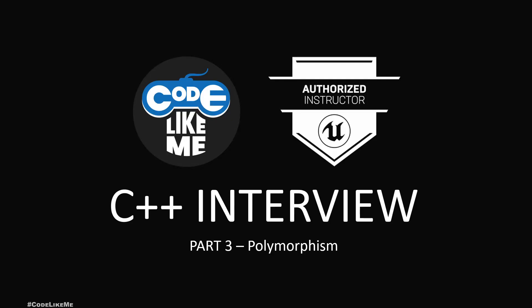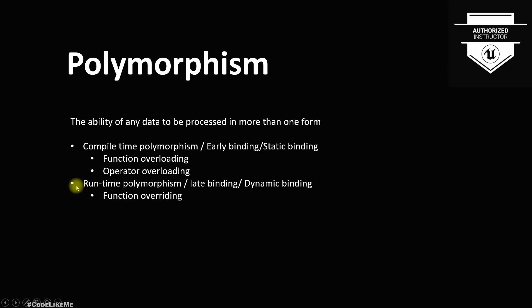Hello everyone. Today in this episode of the C++ interview series we are going to talk about polymorphism — its different forms, what it means, along with examples in C++. Polymorphism is the ability of any data to be processed in more than one form.